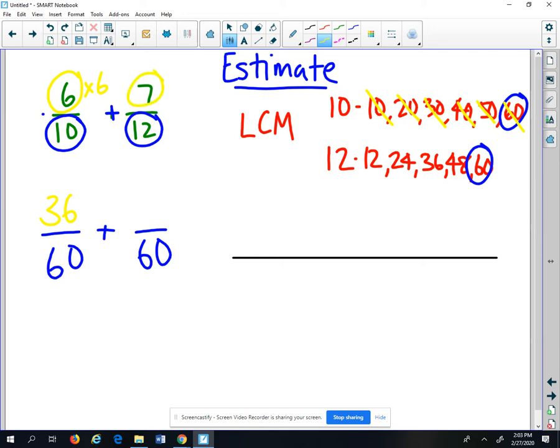And then over here where I had 7 and 12 as the denominator, I said 12 went into 60 five times, so I'm going to multiply 7 times 5, which is 35.